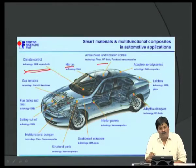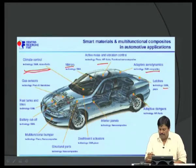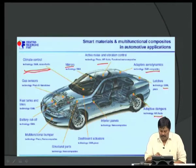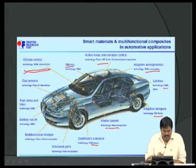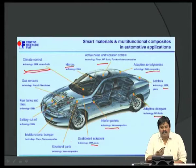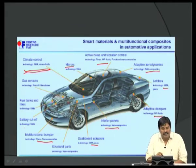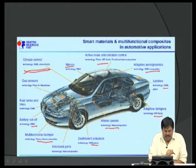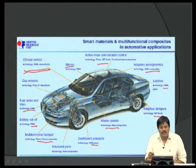Aerodynamics over the car are controlled using shape memory composites. Latches are actuated by SMA, and adaptive dampers made from MR fluid reduce vibration. Interior panels use nano composites, and dashboard actuators are SMA or piezo based. Structural parts are made from nano composites. A multifunctional bumper senses approaching impacts using piezo or nanocomposite batteries. Battery cutoff actuators are SMA-based, and the fuel tank indicator uses SMA and piezo sensors. Today's car has a wide range of smart sensors for passenger comfort.